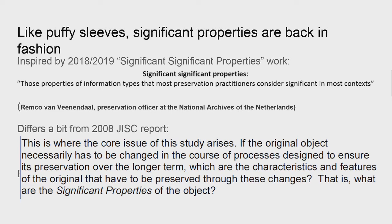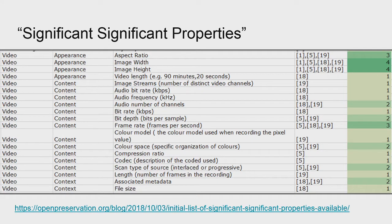This differs a little from the initial JISC report from 2008, which talked about features that need to be preserved through changes. After iPRES 2018, FADGI met and thought this was great starter work from the National Archives of the Netherlands, but maybe we could do a deeper dive. A group of us worked from last March through July and put out a draft, which you can find at the provided link — it's still quite drafty.